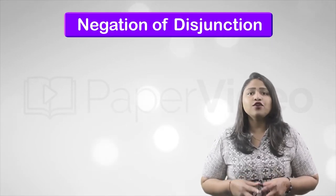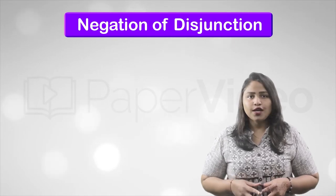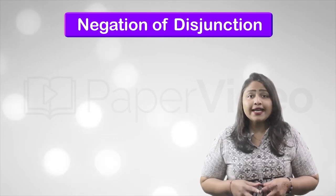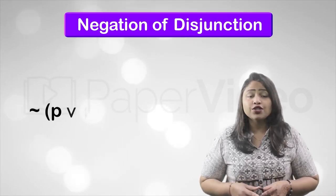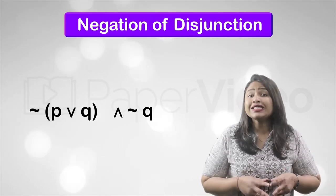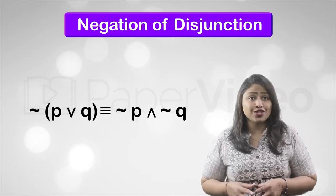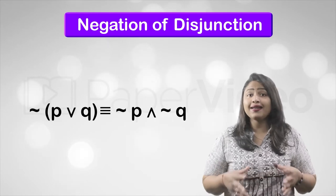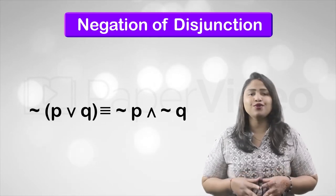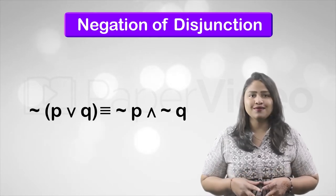Next is negation of disjunction. To find negation of disjunction, replace disjunction with conjunction and add negation to the component statements.